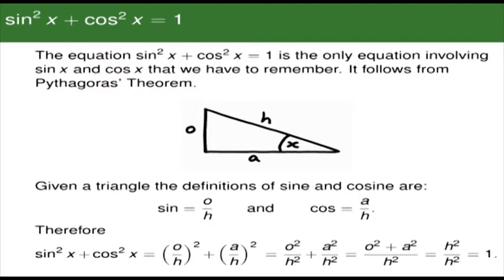So we take sine squared x plus cosine squared x. That's opposite over hypotenuse squared plus adjacent over hypotenuse squared — that's O squared over H squared plus A squared over H squared. Taking a common denominator, we end up with O squared plus A squared on top and H squared on the bottom. We know from Pythagoras' theorem that O squared plus A squared equals H squared. So we end up with H squared over H squared, which equals 1. That's why that equation is true.